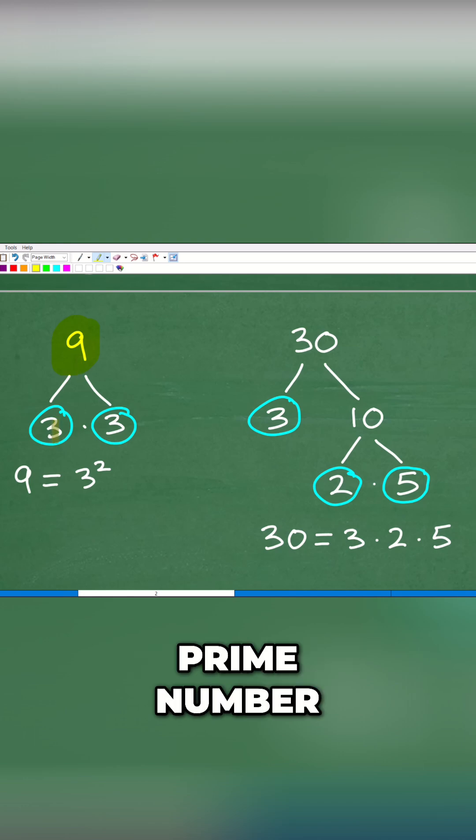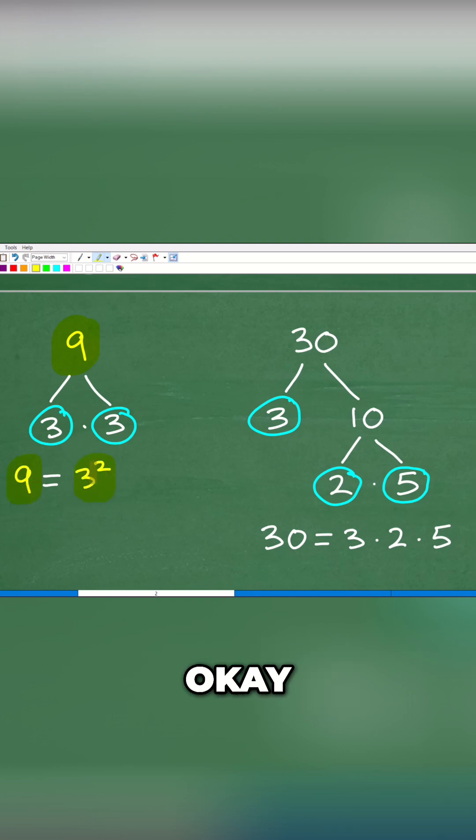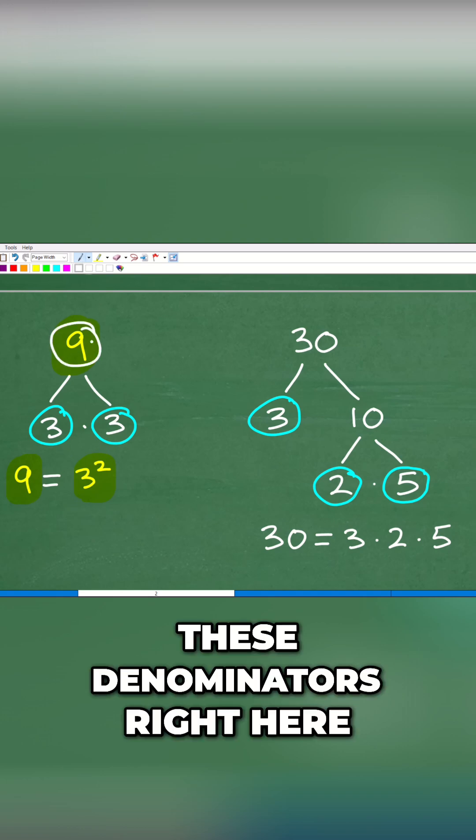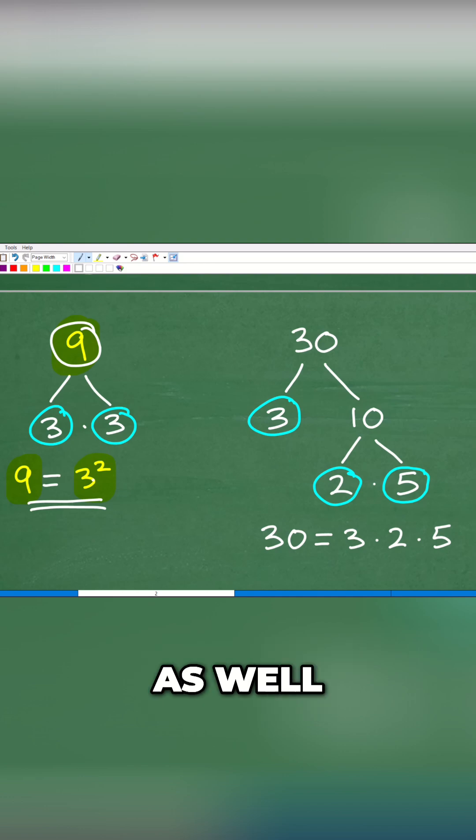3 is a prime number, so we're going to circle that. And 3 over here is also a prime number. So we can write 9 equals 3 squared. You want to write these denominators in terms of their prime factors, and we'd like to use powers like this as well. I'll show you why here in a second.